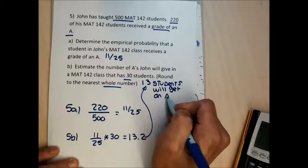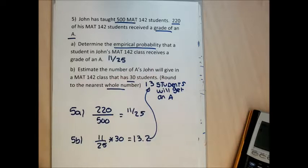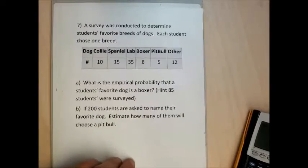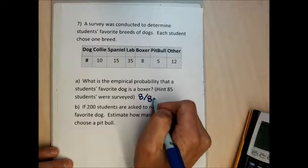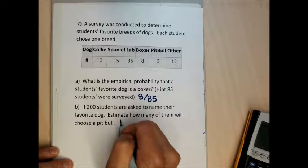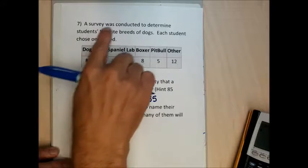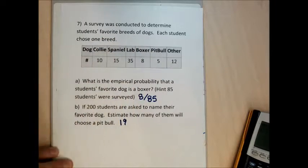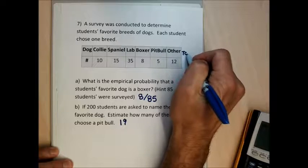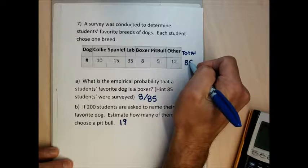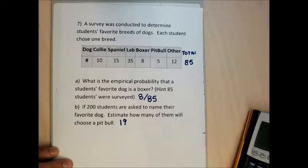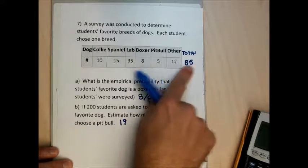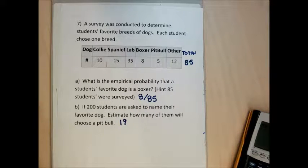All of these are empirical probability questions — using data that's been generated to answer probability questions. For problem 7, the answers are 8 over 85 for part A and 19 for part B. A survey was conducted to determine students' favorite breeds of dogs — 85 students were asked their favorite breed. These numbers are completely made up; I can't imagine I took the time to survey 85 students.